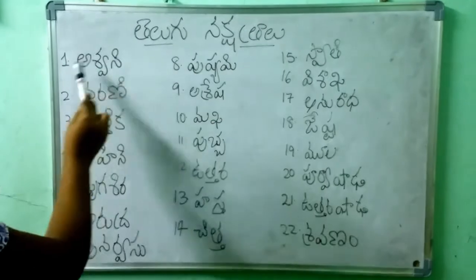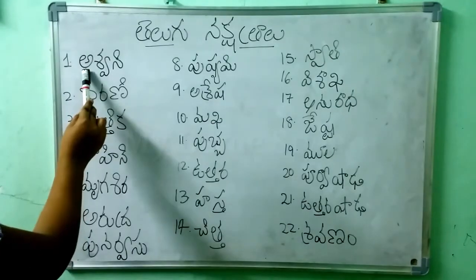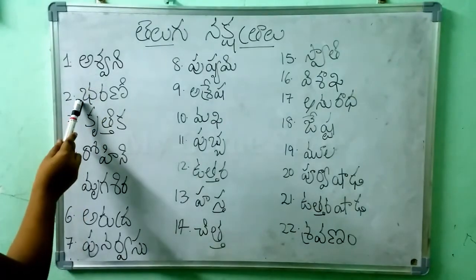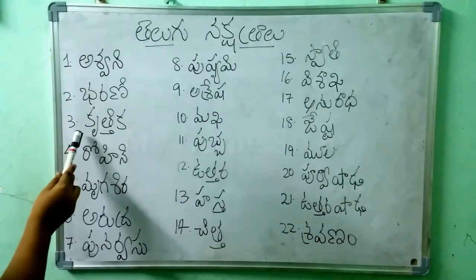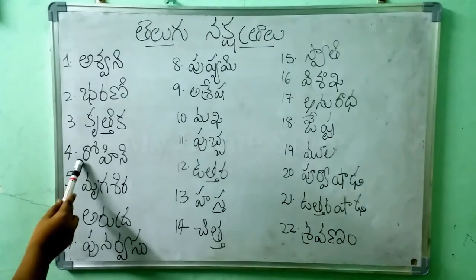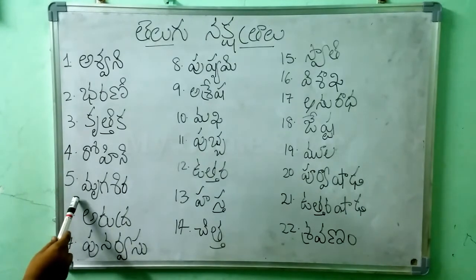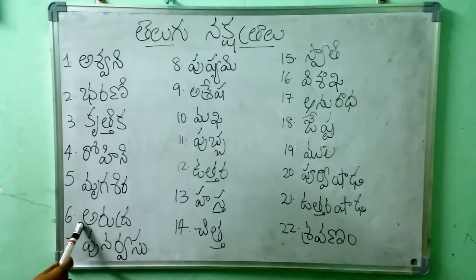Telugu Nakshatralu: Ashwini, Bharani, Krutika, Rohini, Mrogashira, Arudra,